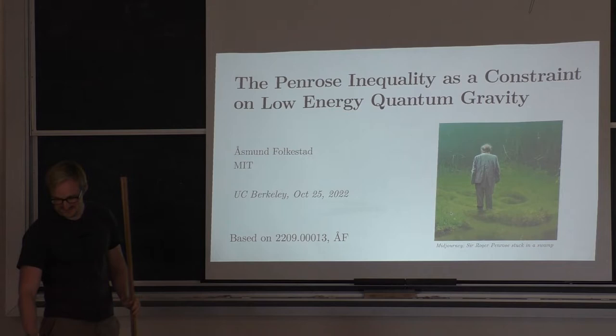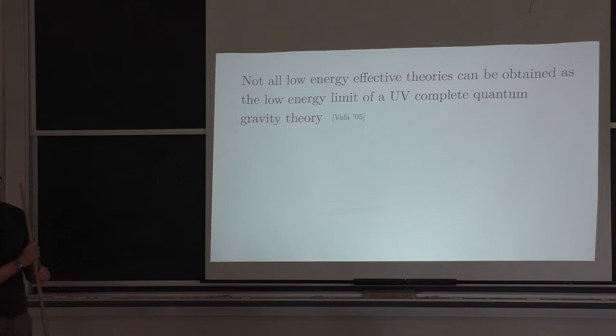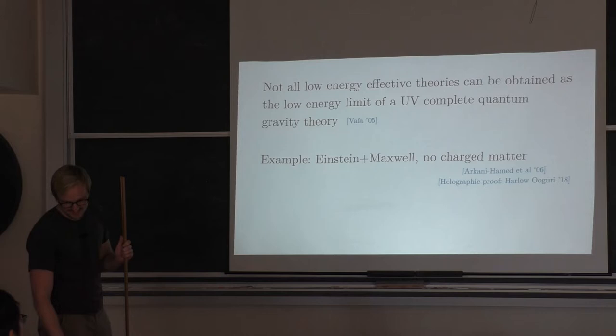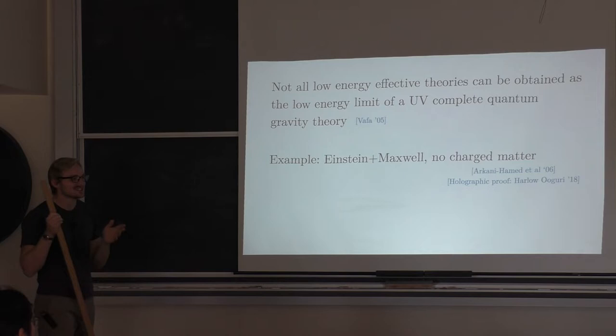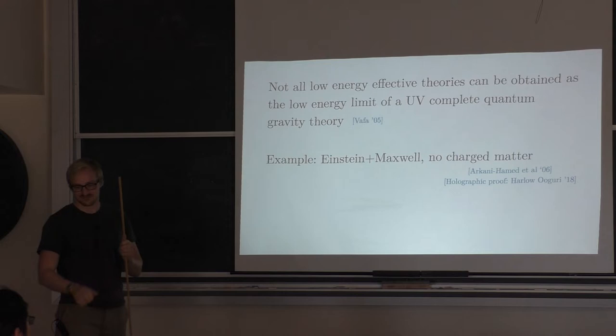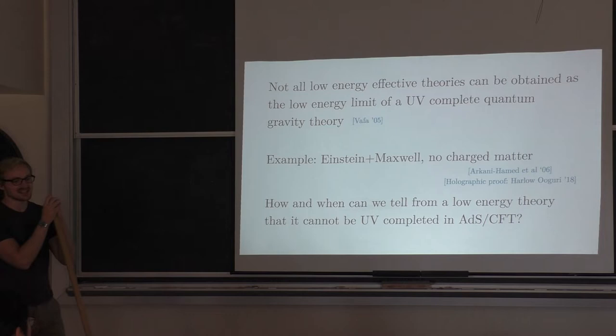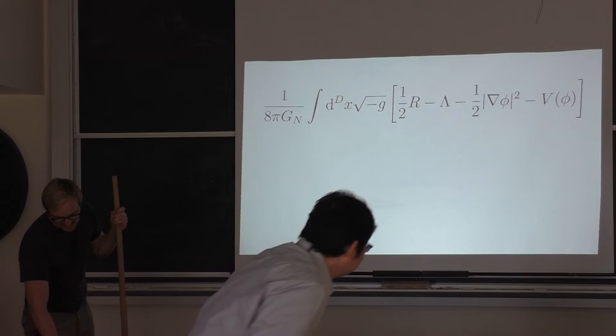Thank you for the invitation to speak. Let me jump right in. We know that not all low-energy effective theories can be obtained as the low-energy limit of a UV-complete quantum gravity theory. A well-known example is Einstein-Maxwell theory with no charged matter. This violates the weak gravity conjecture, and there is also a holographic proof of this by Harlow and Agoury. So how and when can we tell from a low-energy theory that it cannot be UV-completed in AdS/CFT?